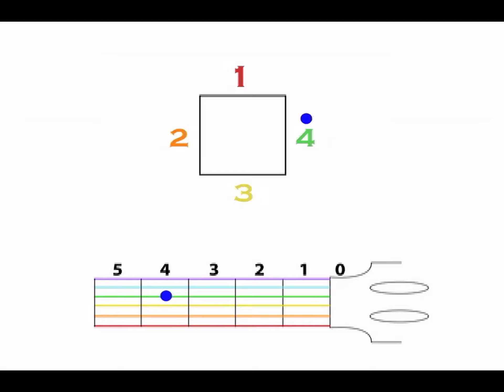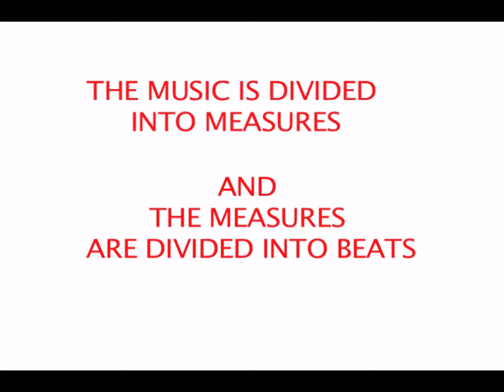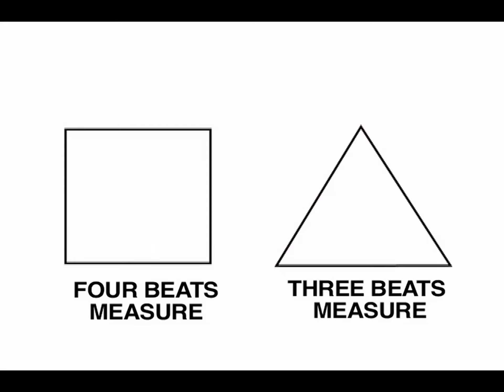Every song is divided into fractions called measures. A measure is a unit of time in music representing a regular grouping of beats. In Music in Color, we represent each measure with a geometric figure, the more common ones being a square and a triangle. A measure is divided by each side of the figure, and each side represents a beat. The square has four beats per measure, and the triangle has three beats per measure.